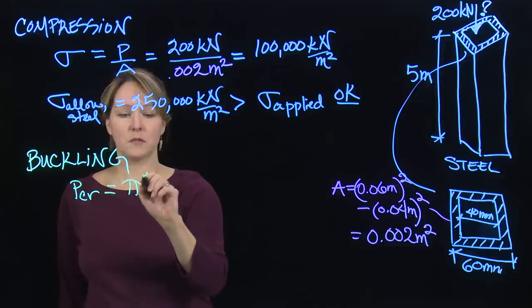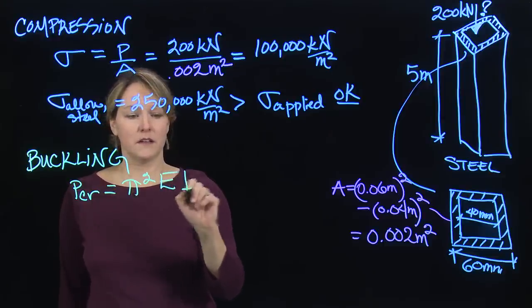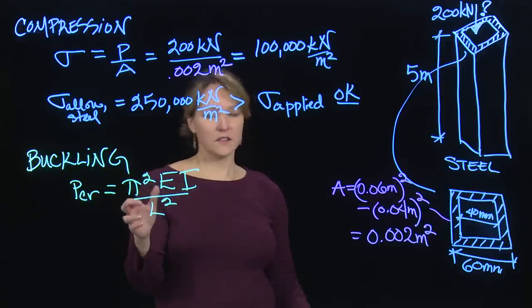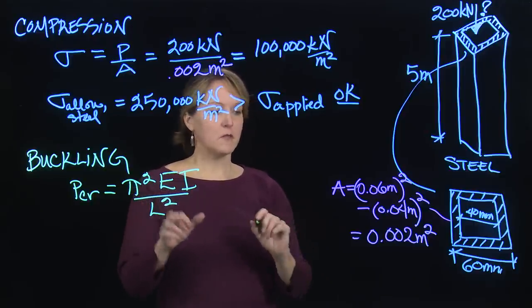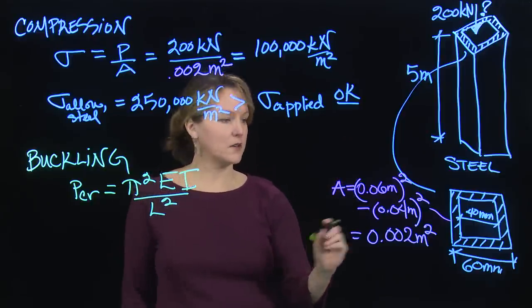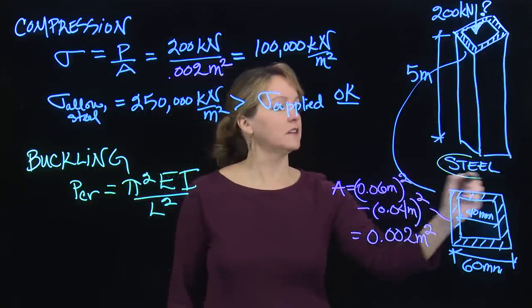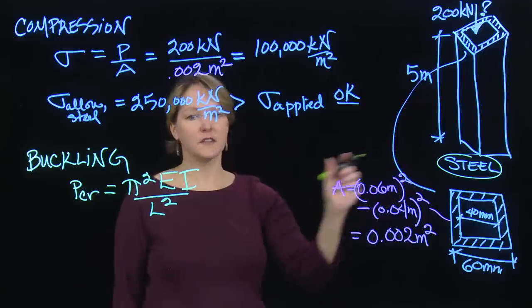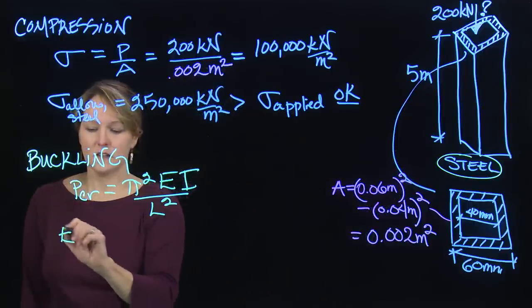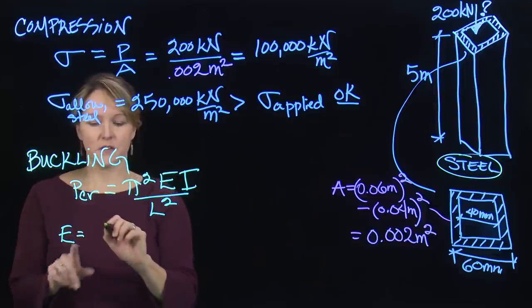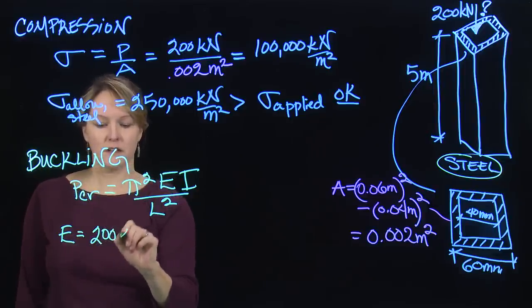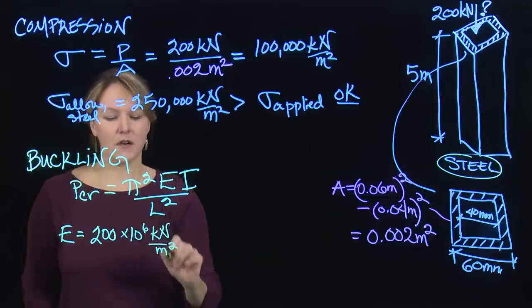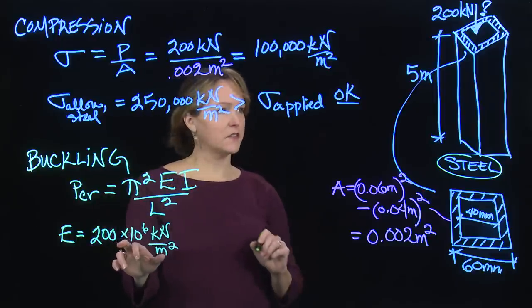And that equals pi squared EI over L squared. Pi is just a constant. E is the modulus of elasticity of the material. So we're talking about steel, and I can look up for steel and figure out what the modulus of elasticity is for steel. So E is the modulus of elasticity. And for steel, that is 200 times 10 to the 6th kilonewtons per meter squared, a pretty high number. That's just a function of the material.